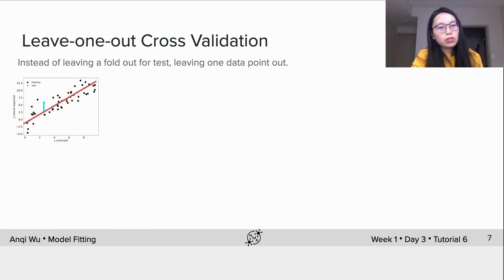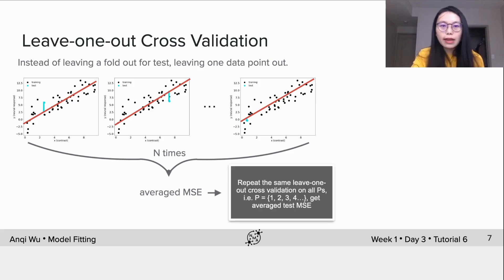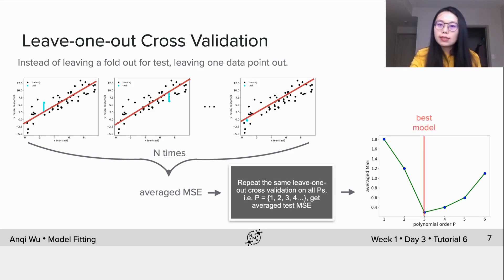We then feed the model with the training split and calculate MSE on the test data point, and we repeat this for all data points and obtain an averaged MSE. The number of times we repeat is n, because we have n data points, right? Finally, we repeat the same leave one out cross-validation on all polynomial orders and compare. The figure shows the average MSE for all polynomial orders using leave one out cross-validation, which selects the same best model as k-fold cross-validation does.